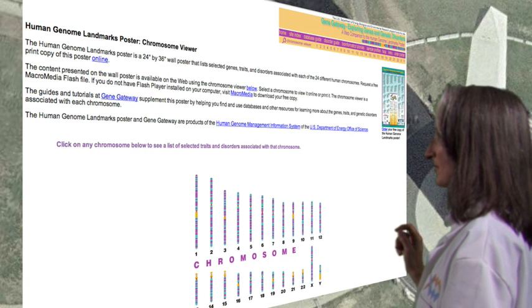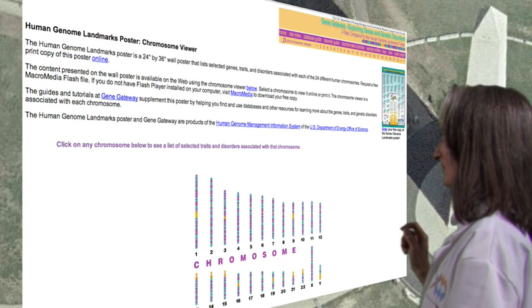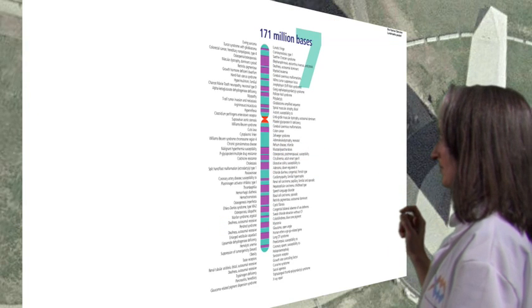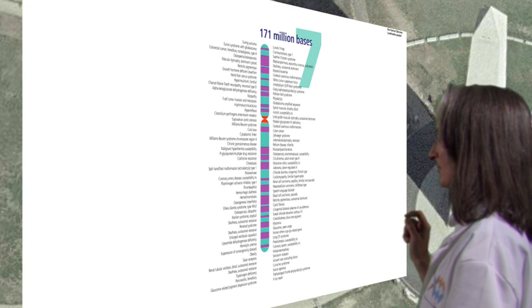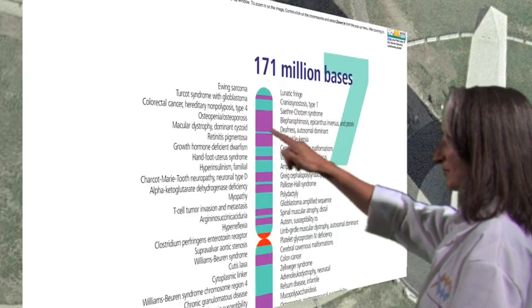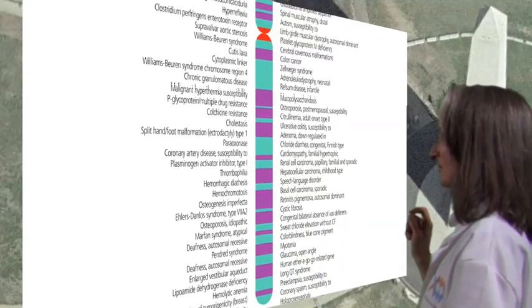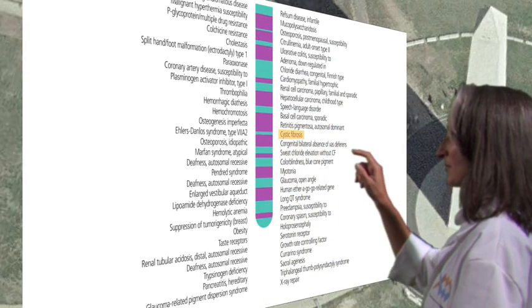When you get to the webpage for each particular chromosome, you can see a list of traits and disorders associated with genes on that chromosome. Let's enlarge Chromosome 7 and look at one gene thereon. As you can see, the gene that causes cystic fibrosis is here.